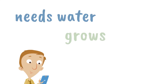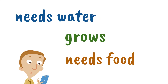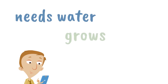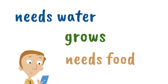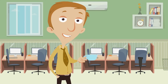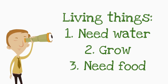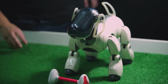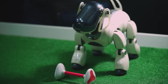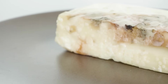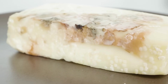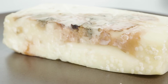If something needs water, grows, and needs food — it's living. It's a living thing. I think you're ready. You know all the clues. Now you can explain exactly how this robot dog is not a living thing, even though it moves on its own. It doesn't pass the test, but mold does. It's weird that mold is a living thing. I don't like that. Not one bit.